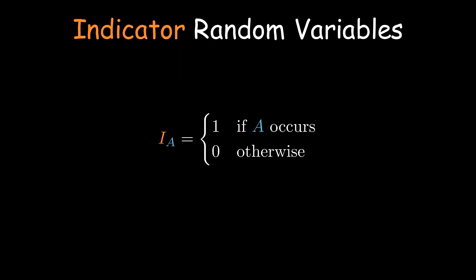Now let's see how indicator random variables connect probability with expectation. The expected value of an indicator random variable is the probability of the event it represents. But why is this true?